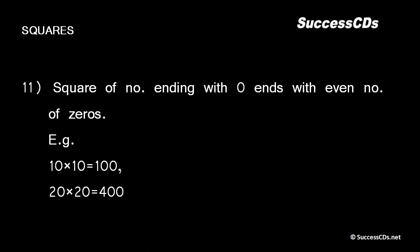The square of a number ending with digit 0 always ends with an even number of zeros. For example, 10² = 100, which has 2 zeros. 20² = 400, which also has 2 zeros.